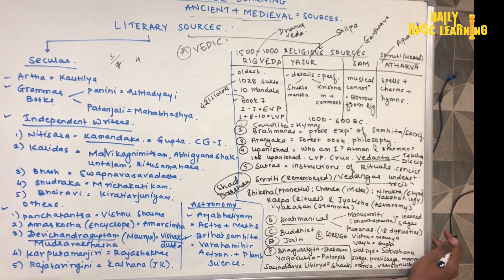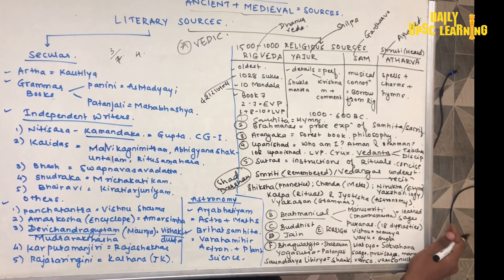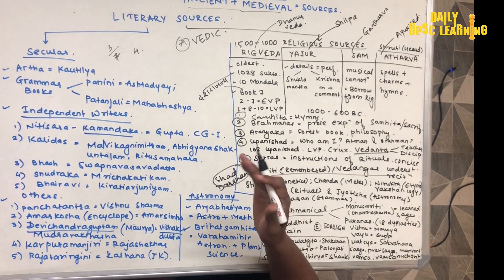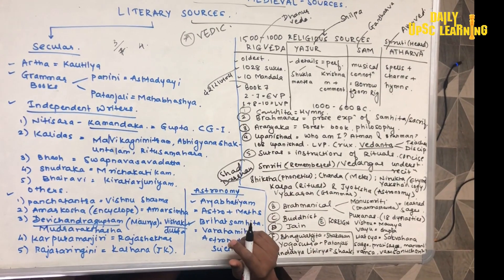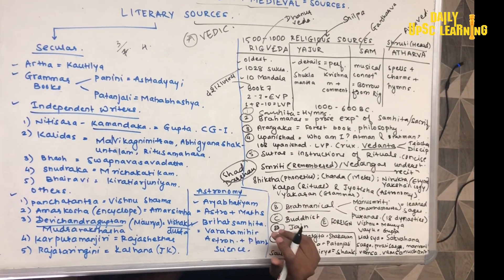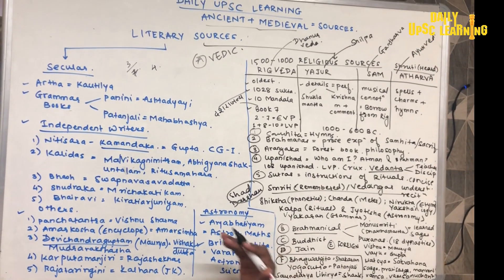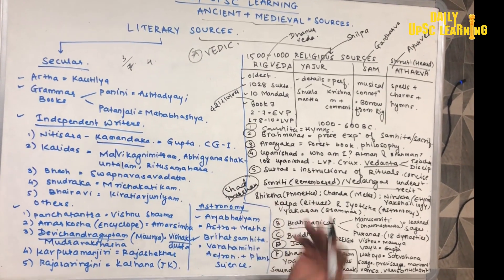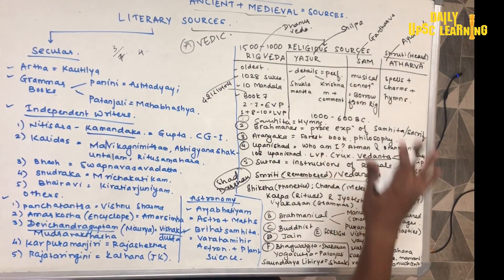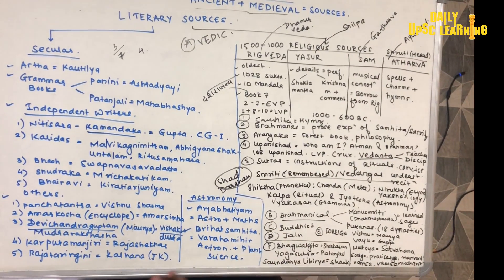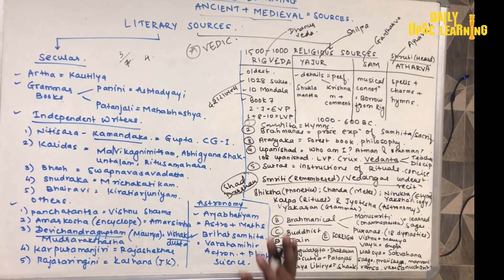First of all, we will read ancient India. In ancient India, the sources are important. In every alternative year, there are some questions — sometimes they will ask about Panini or who wrote a particular text. We have a simple mind map in which we have given you everything, that is all the sources are given right here.